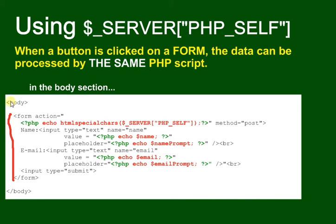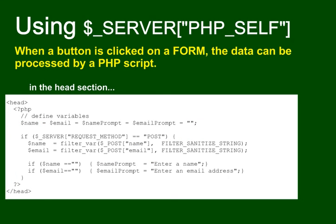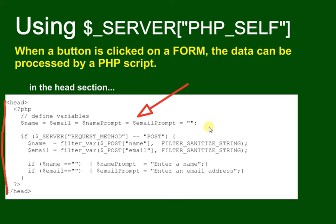This is just the body section of our webpage. At the top of the page, in the head section, we put some PHP code to set those variables. PHP lets us do this nicely: dollar name equals dollar email equals dollar name_prompt equals dollar email_prompt equals empty string — setting them all to the same value to start with. So we're just defining those variables there.